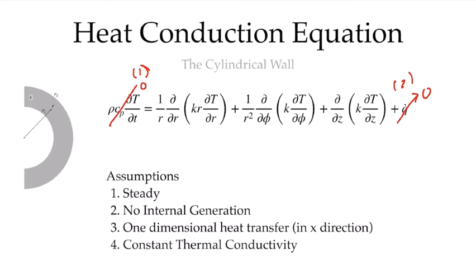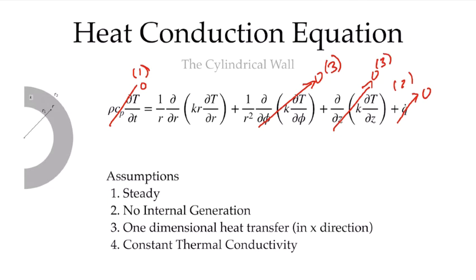If it's one-dimensional, assumption three, the terms in the theta and z direction go to zero. That leaves us with this expression for conduction in the radial direction. Because it's now one-dimensional, the partial derivatives can be written as ordinary derivatives.